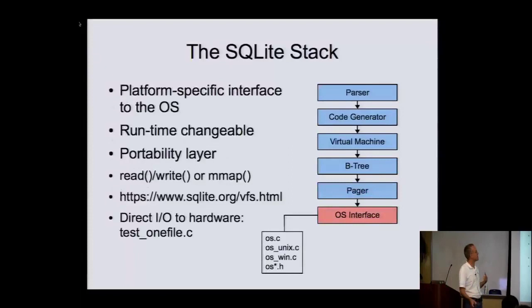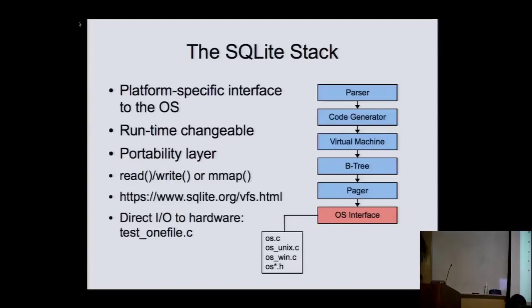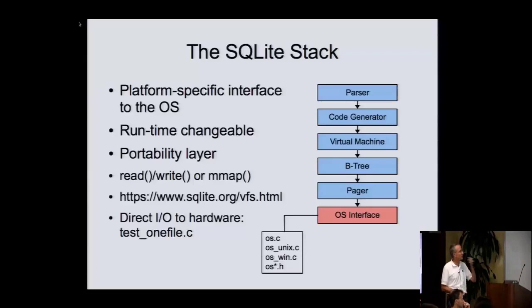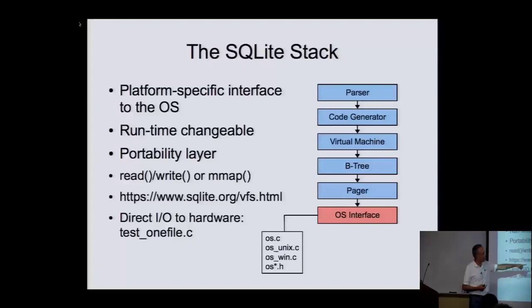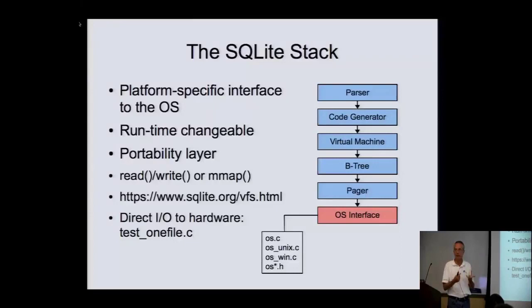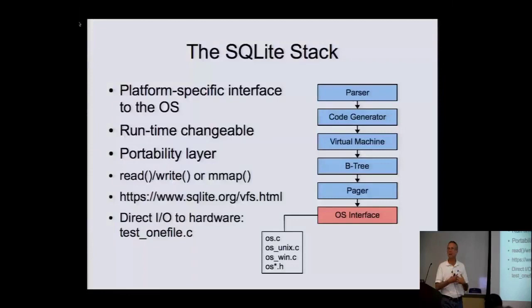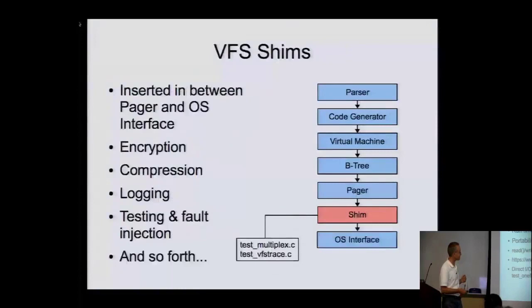At the bottom is the operating system interface — the portability layer. This is how we allow SQLite to operate on Windows, Mac, various embedded operating systems, including some custom ones. You can plug in new OS interfaces at runtime. We have an example of an OS interface that talks directly to hardware, bypassing the operating system completely. You can actually buy commercial off-the-shelf devices that use SQLite and plug in their own OS interface that talks directly to the Flash controller — using SQLite as their file system with no file system on the device, only the database.